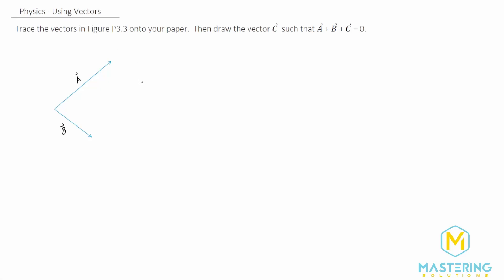Welcome to Mastering Solutions. In this using vectors problem, they want us to take these two vectors that they're given, A and B, and they want us to draw vector C so that all three of them added together will end up with zero.